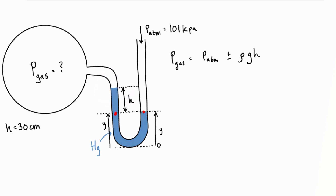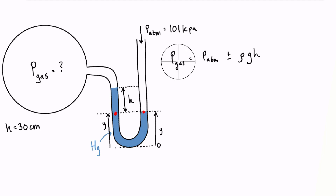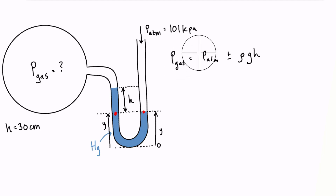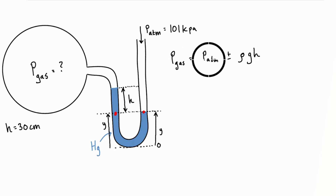Knowing that, we only need to inspect this part of the manometer. Down here is going to have a higher pressure than the fluid above it, because as you go deeper into a fluid, the pressure increases. So this point has a higher pressure than this point, which tells us right away that atmospheric pressure is greater than the pressure of the gas — meaning the pressure of the gas is less than atmospheric pressure. So we are going to subtract that term.